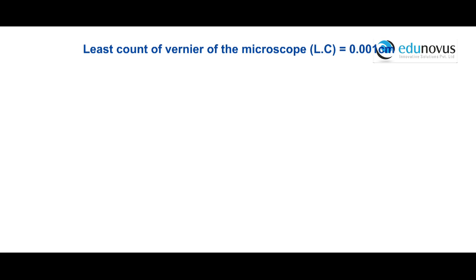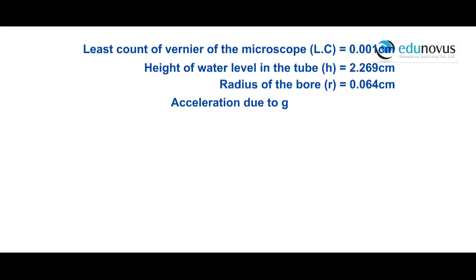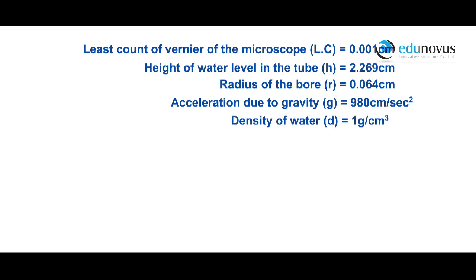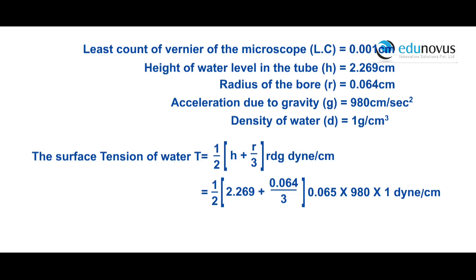Least count LC = 0.001 cm; height of water level h = 2.269 cm; radius of bore r = 0.064 cm; acceleration due to gravity g = 980 cm/s²; density of water d = 1 g/cm³. Therefore, surface tension T = (1/2) × (h + r/3) × r × d × g = (1/2) × (2.269 + 0.064/3) × 0.064 × 980 × 1 = 71.15 dynes per centimeter.